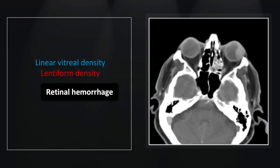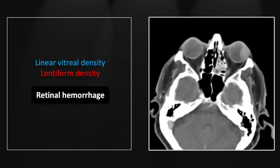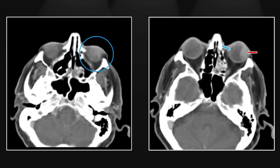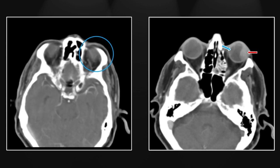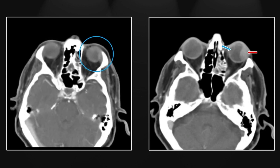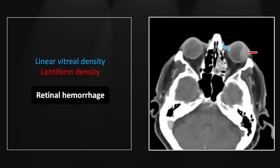Somewhat similar is the next case of retinal hemorrhage. You can see linear filling defects similar to the previous case but on the lateral aspect. There is a lentiform density essentially filling in the space between that detached retina and the outer portion of the globe — very similar to the preceding case, yet with the added dimension of hemorrhage. That is a case of retinal detachment with hemorrhage.